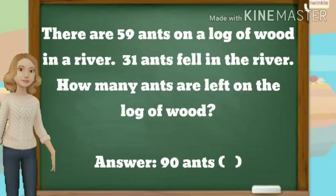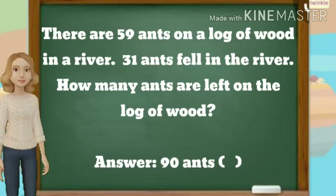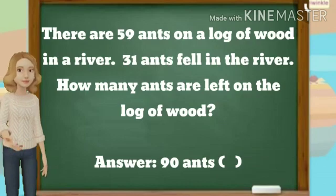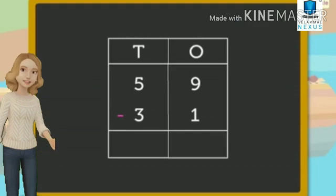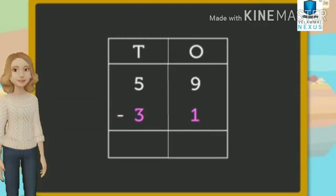So, first we need to analyze the information. There are 59 ants on a log of wood and 31 ants fell in the river. And the question is, how many ants are left on the log of wood? So, we have a keyword 'left'. So, we need to subtract. We are going to subtract 31 from 59.